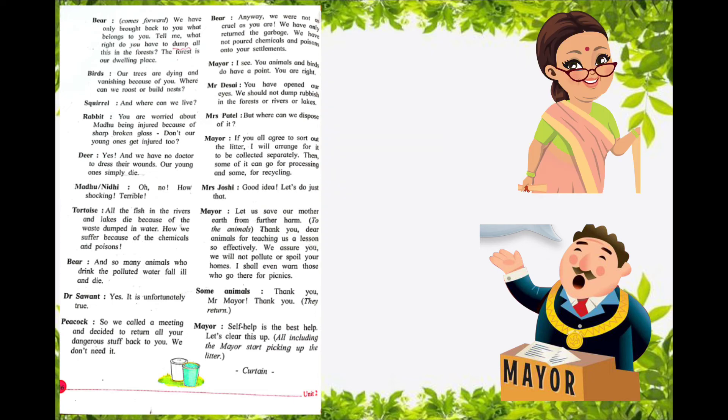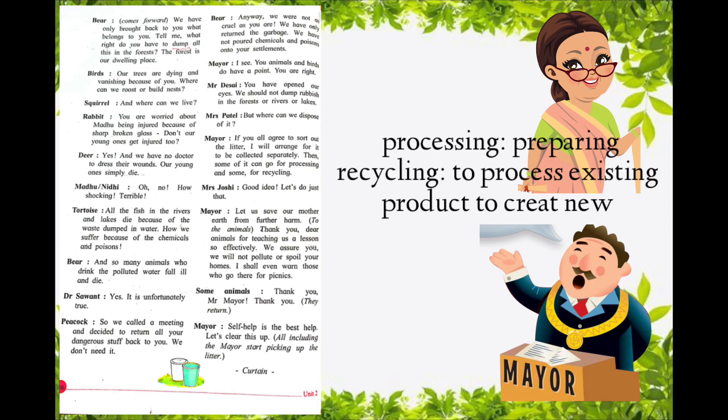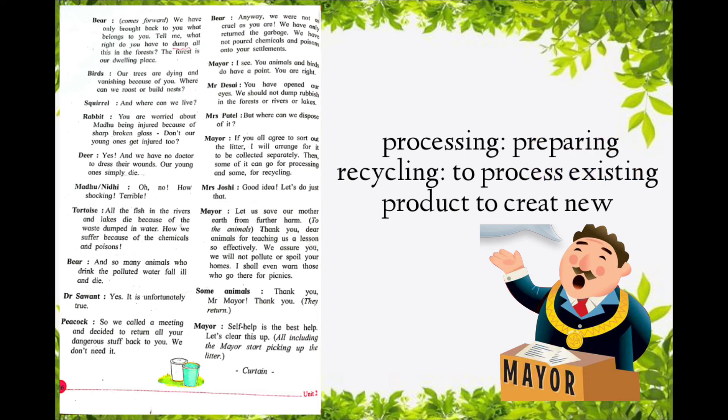Mr. Patel asked, 'But where can we dispose of it?' The mayor said, 'If you all agree to sort out the litter, I will arrange for it to be collected separately. Then some of it can go for processing and some for recycling.' Underline 'processing' and 'recycling'. Recycling means to collect and treat rubbish to produce useful materials which can be used again.